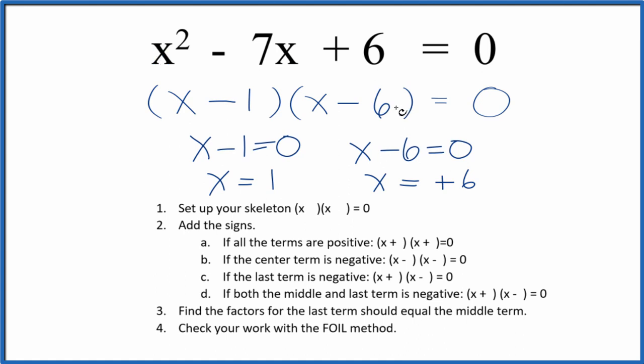If you use the quadratic formula, you would get these same numbers. This is Dr. B factoring the equation x² - 7x + 6 = 0. Thanks for watching.